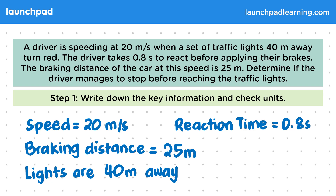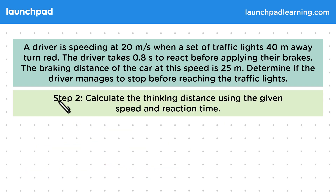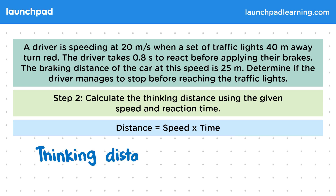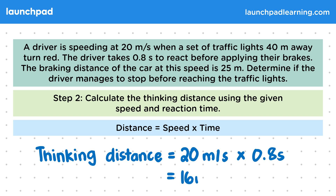Let's start by figuring out our missing piece of information. For step two, calculate the thinking distance using the given speed and reaction time. We can do this using the equation distance equals speed times time. The thinking distance is found by multiplying 20 metres per second by 0.8 seconds, giving us a thinking distance of 16 metres.